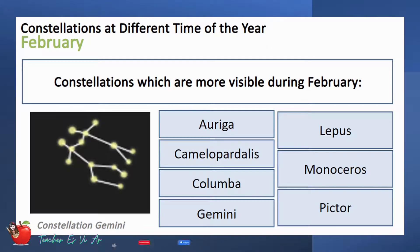Here are the constellations which are more visible during February: Auriga, Camelopardalis, Lepus, Monoceros, Columba, Pictor, and Gemini.